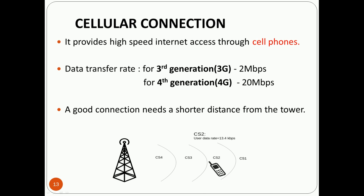Next is cellular connection, which provides high-speed internet access through mobile phones. The data transfer rate varies by generation: for 3G it is 2 Mbps and for 4G it is 20 Mbps. A good connection needs a shorter distance from the tower — the closer the device is to the tower, the better the connection.